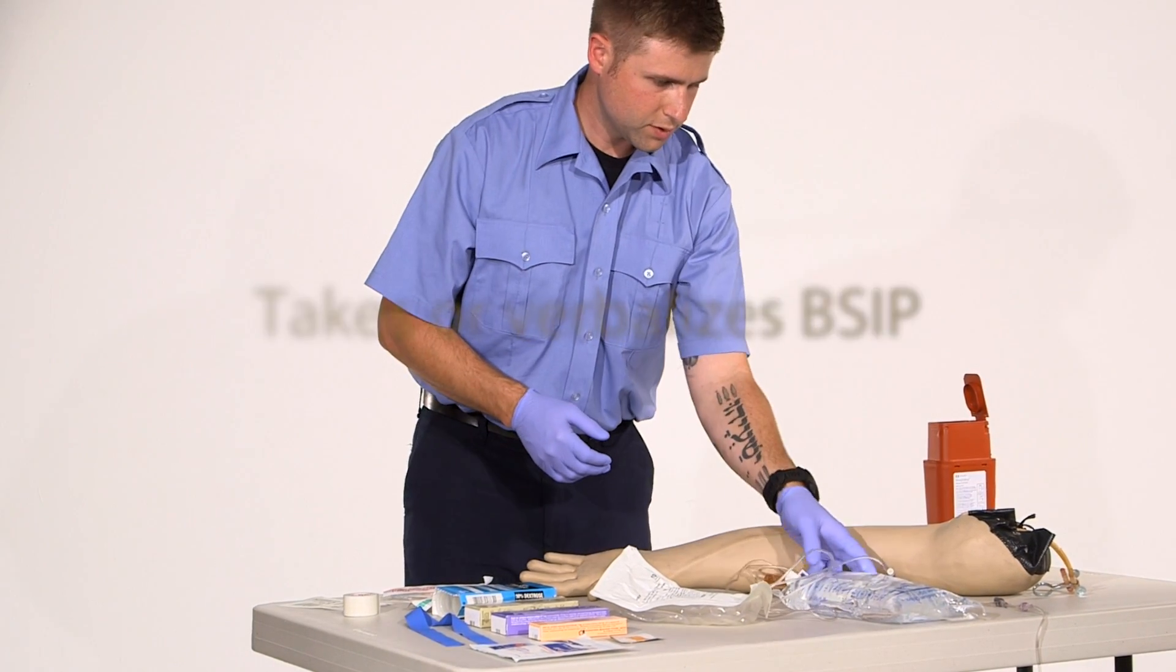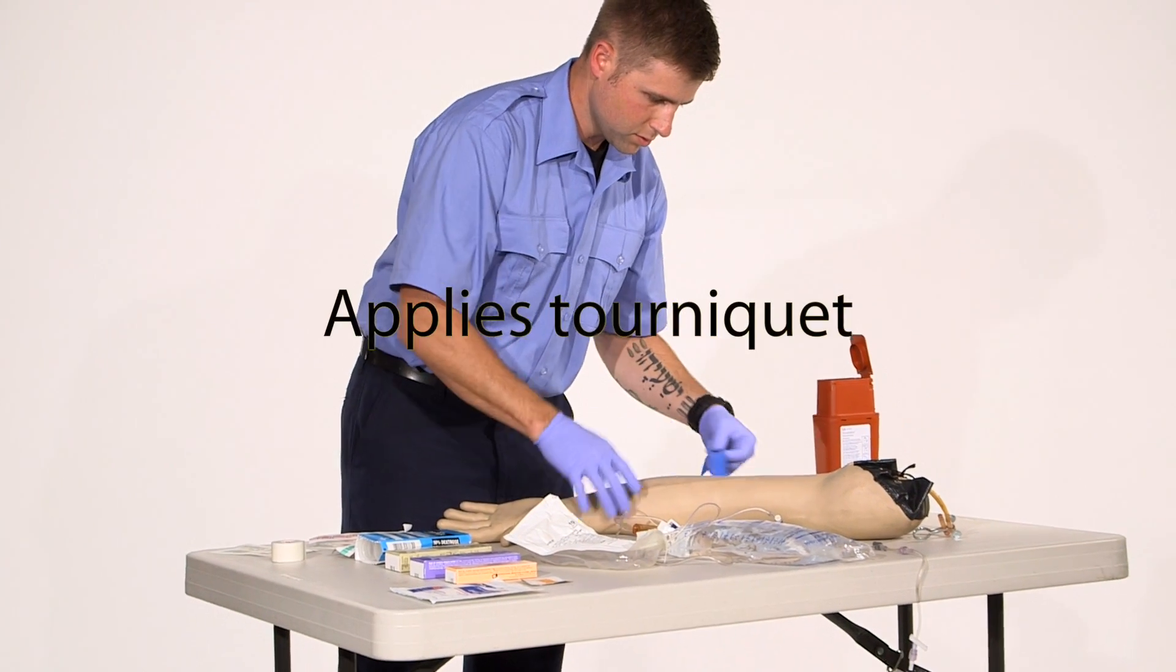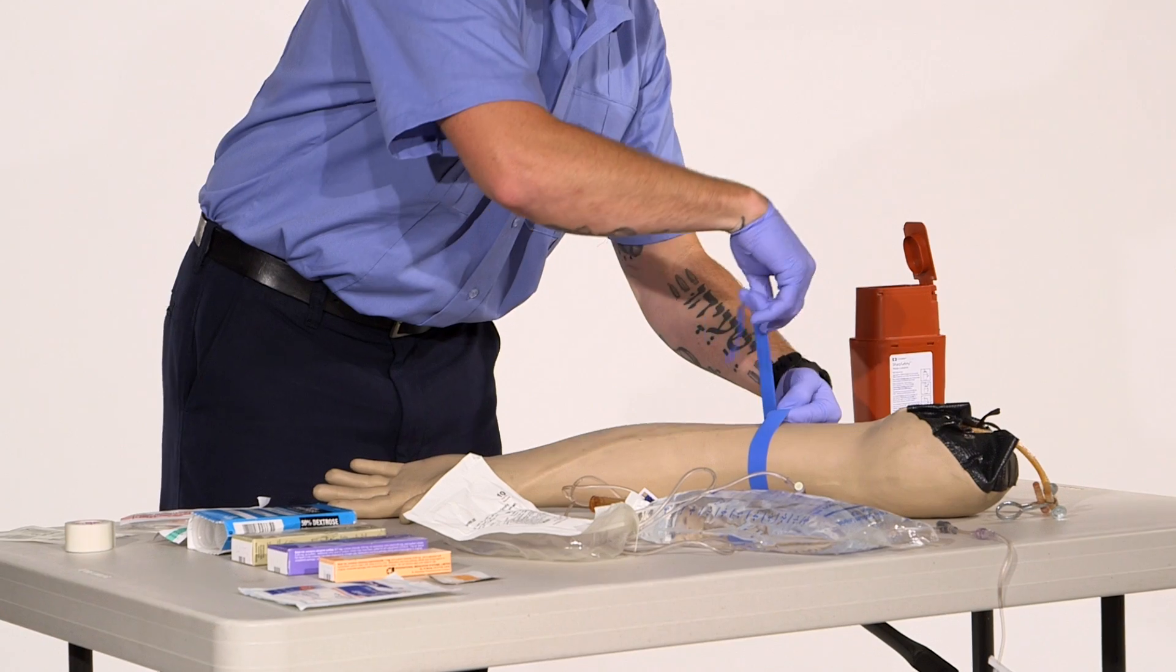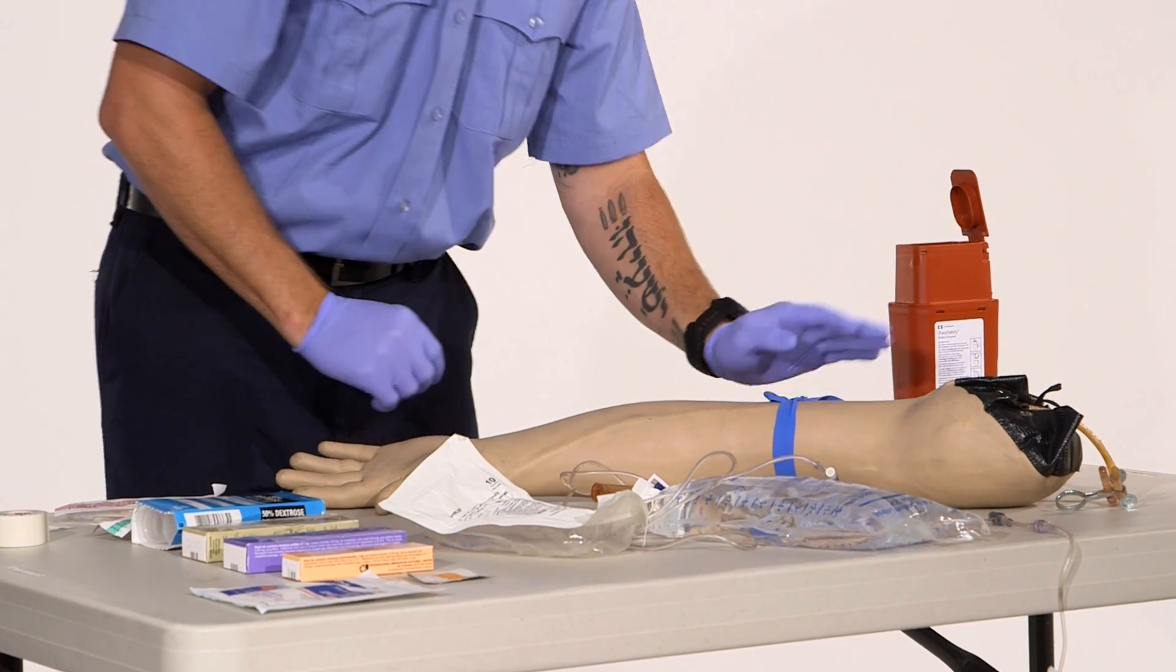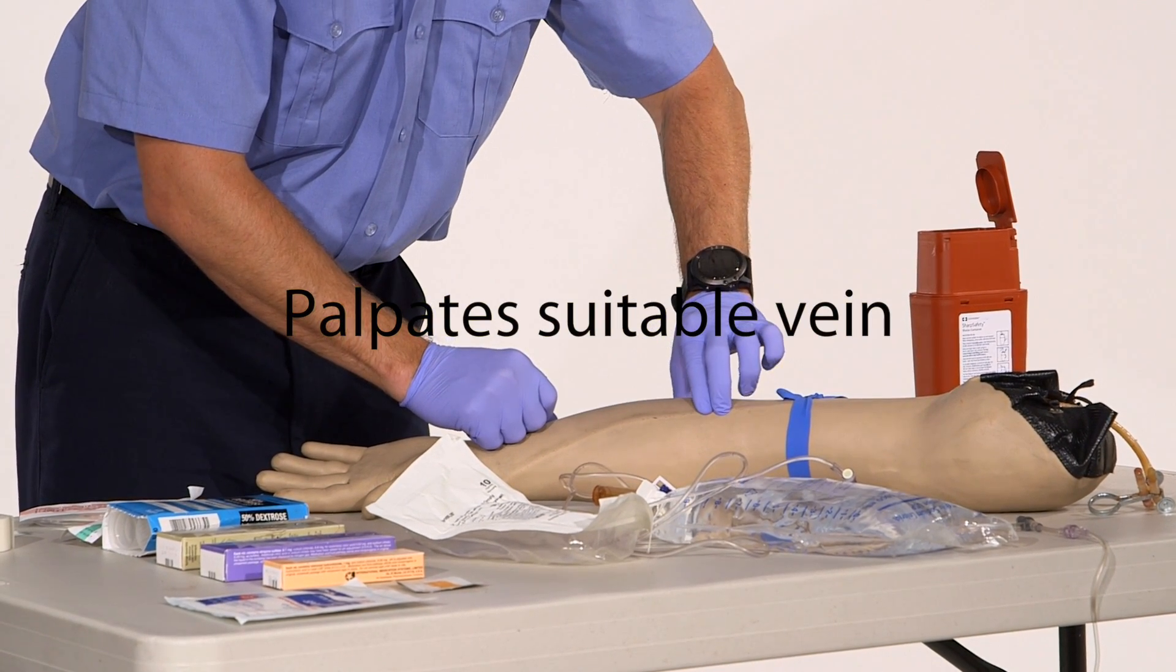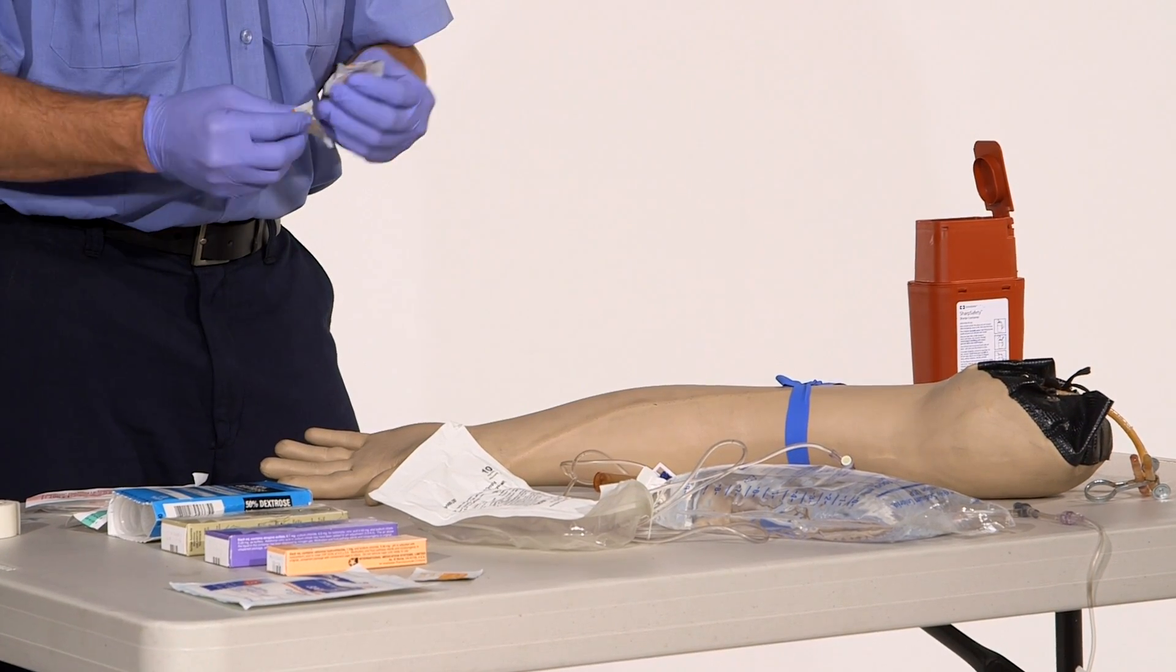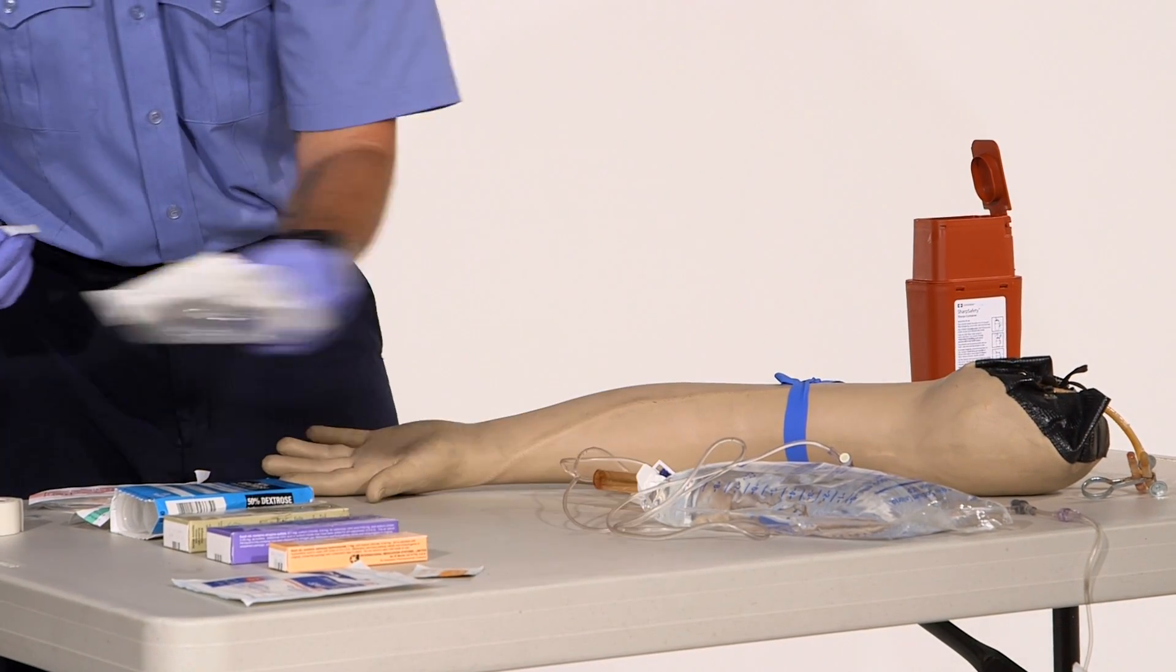All right, I want to select a vein, so I'm going to place a tourniquet in my arm. I got my tourniquet placed, I'm going to palpate a vein, find a correct site for a catheter. All right, got a good vein there.